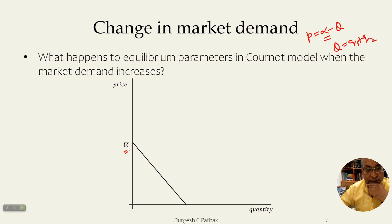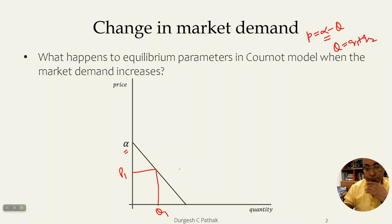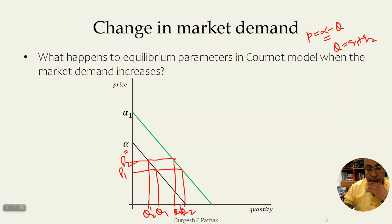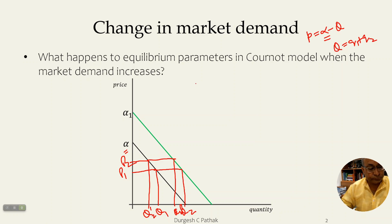So alpha is the intercept here. Suppose at price P1 people were demanding quantity Q1. When we say there is an increase in market demand, it means at the same price P1 people are now demanding a much larger quantity Q2. At price P2 they were demanding Q2-dash, and now they are demanding Q2-double-dash. So quantity demanded is increasing for every price — this is the increase in market demand.